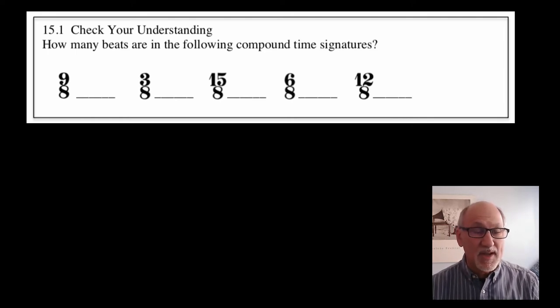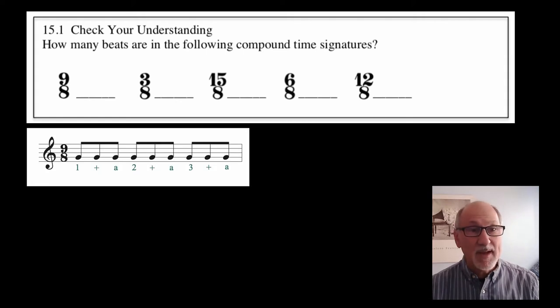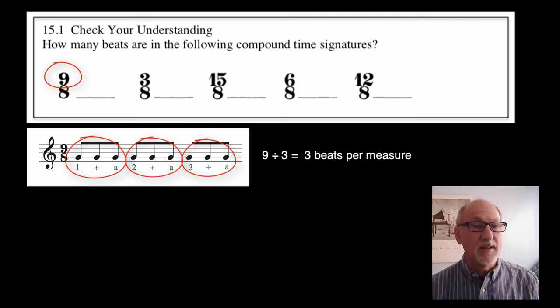The first time signature is 9-8, indicating that there would be 9 eighth notes. But those would be much too quick to be considered as the beats. So we would divide the 9 by 3, and we would say that there are 3 beats per measure.